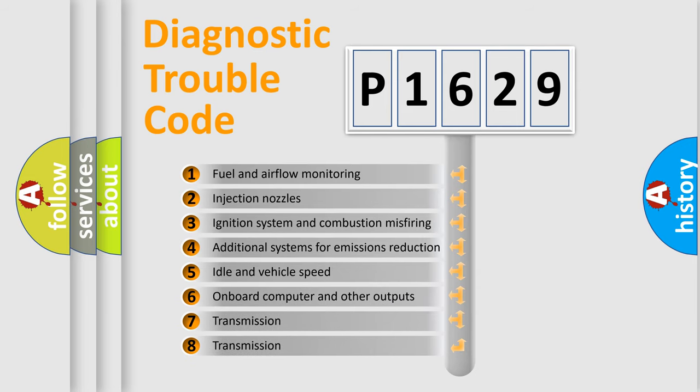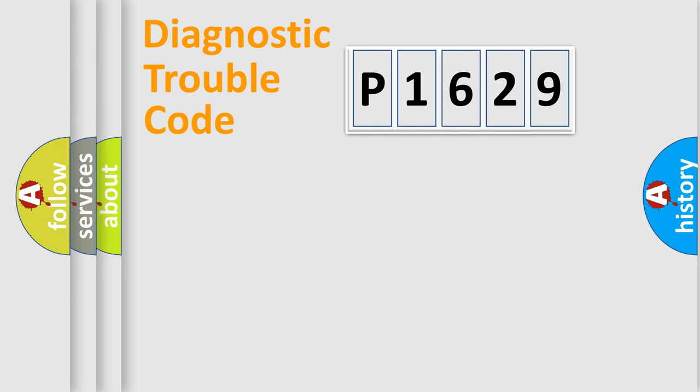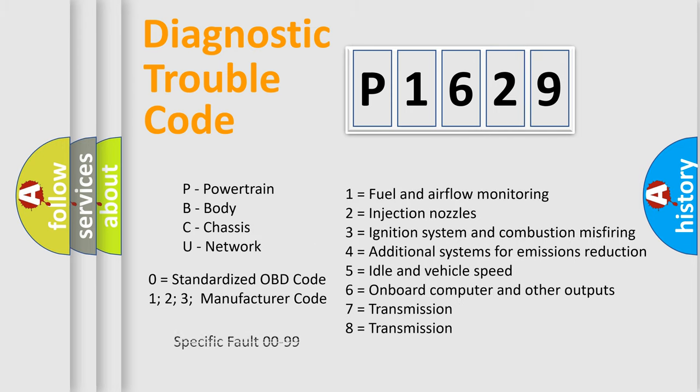The third character specifies a subset of errors. The distribution shown is valid only for the standardized DTC code. Only the last two characters define the specific fault of the group. Let's not forget that such a division is valid only if the second character code is expressed by the number zero.